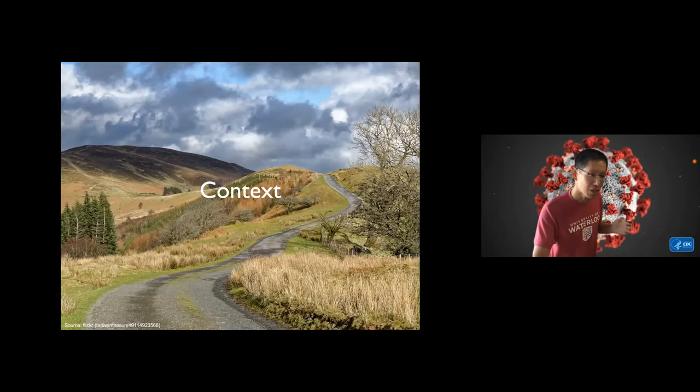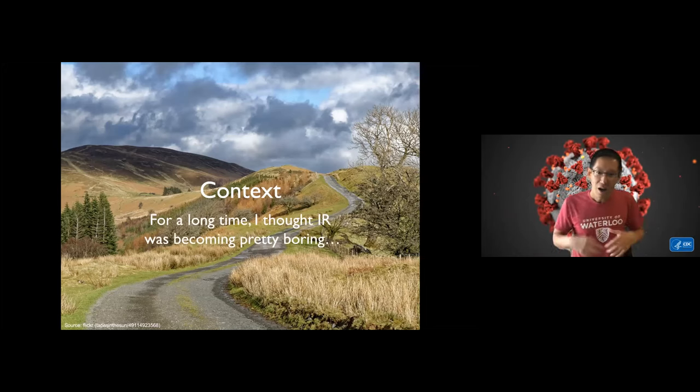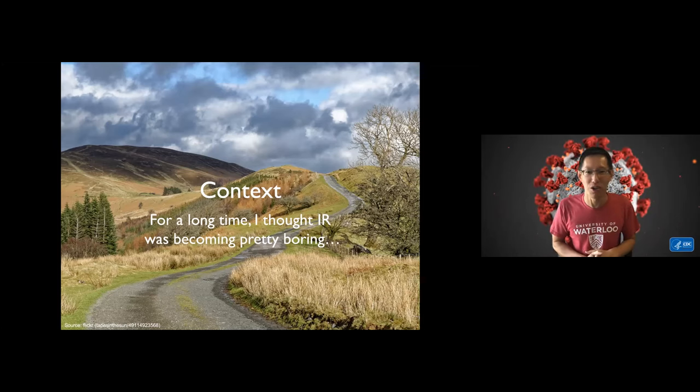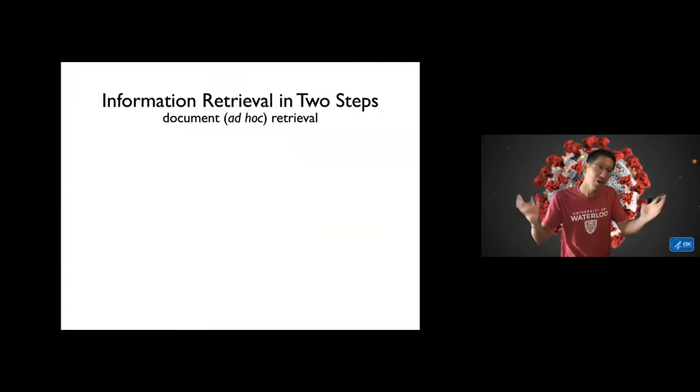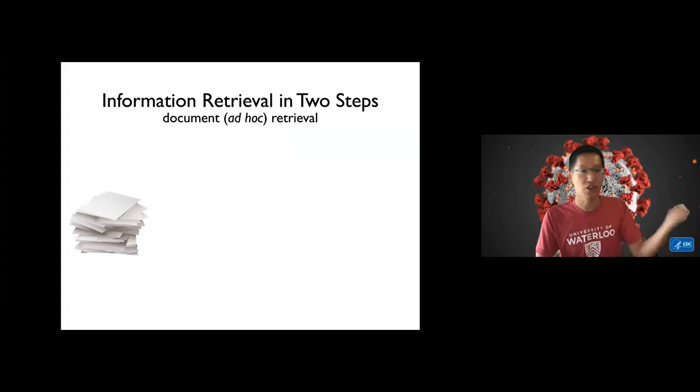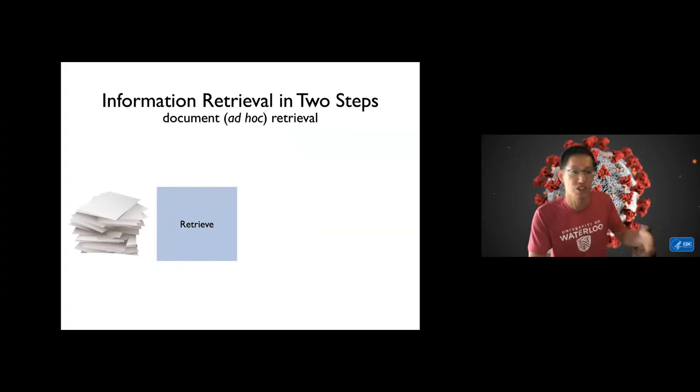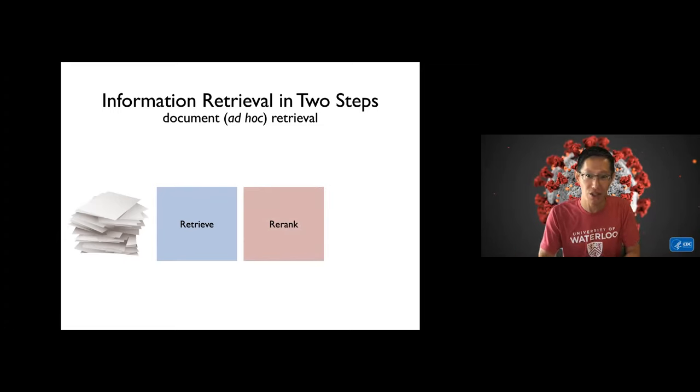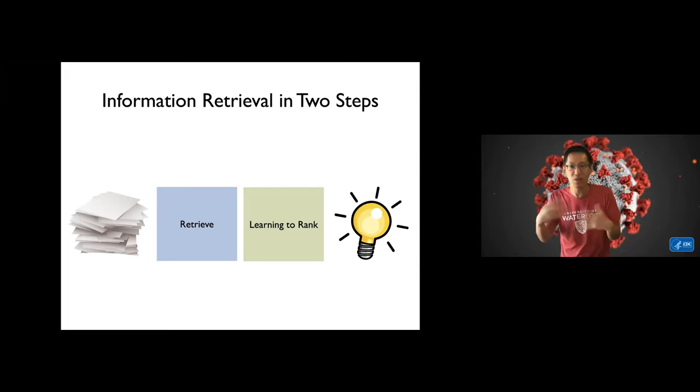Now to convince you of that, I want to set the context. I've been doing IR for quite a while now and for a long time I thought that IR was becoming pretty boring in the sense that if you want to do ad hoc retrieval there was sort of one standard recipe. Start with a pile of documents, you retrieve using something like bag of words BM25, and then you re-rank the candidate documents. So first stage retrieval followed by re-rankers and then you're done.